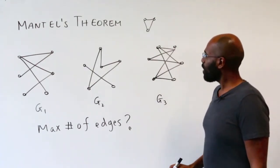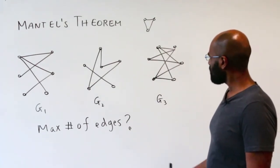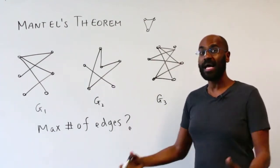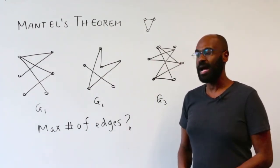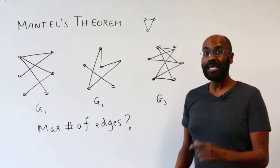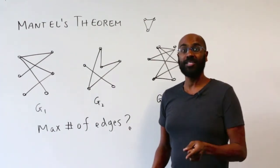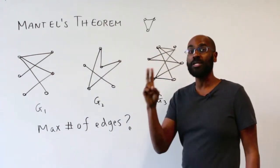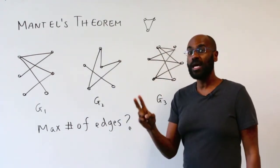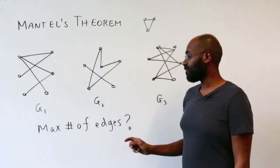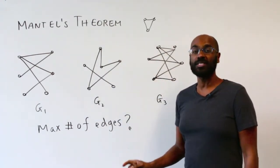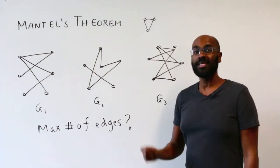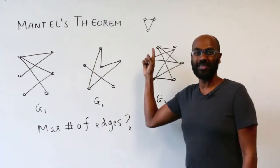So I wonder, if that's the case, what's the maximum number of edges we can pack in such a graph? That's the question we're going to answer today in Mantel's theorem, and we're going to give two different proofs of an upper bound for the number of edges on a graph on n vertices that has no triangle in it.